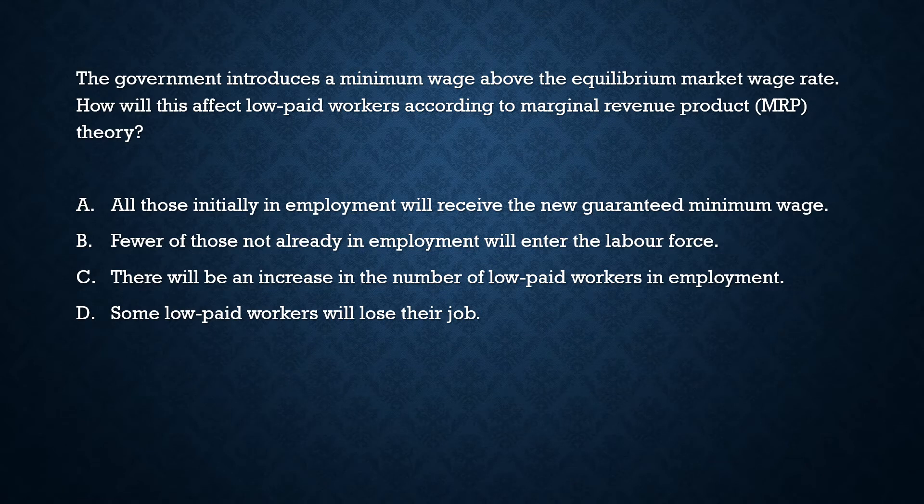The next question asks: when the government introduces a minimum wage above the equilibrium market wage rate, how will this affect low-paid workers according to marginal revenue product theory? According to MRP theory, the wage rate is based on the marginal revenue product — how much additional revenue is created by an additional employee, which is marginal physical product multiplied by marginal revenue. Option A — all those initially in employment will receive the new minimum wage — is wrong.